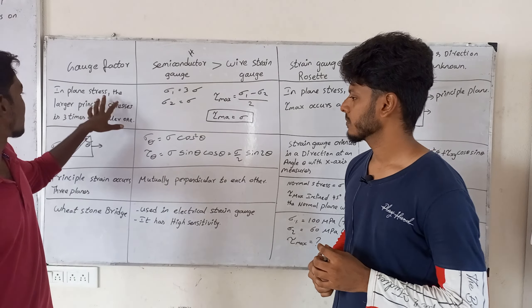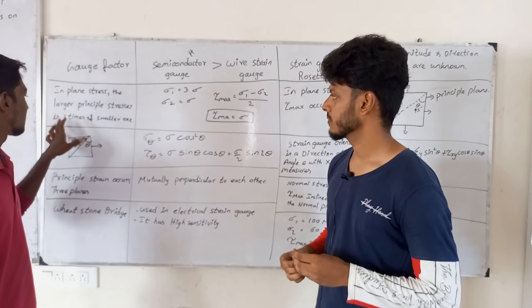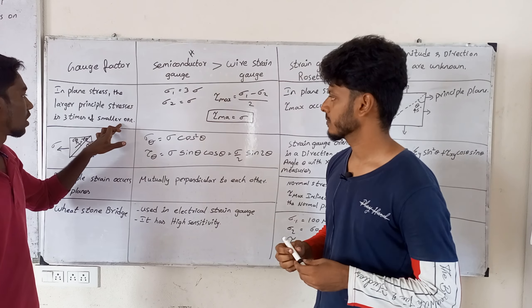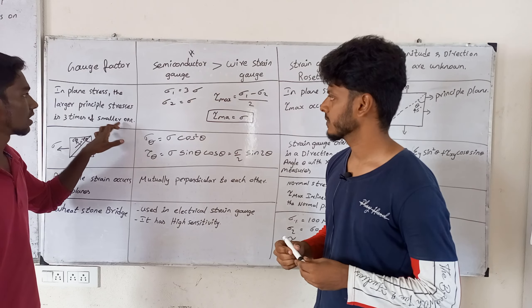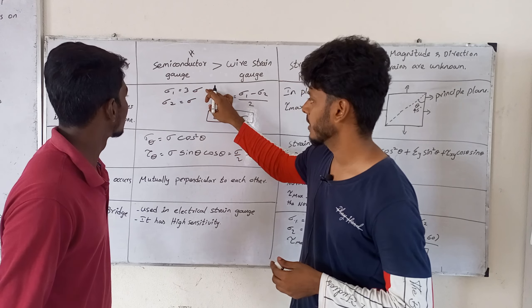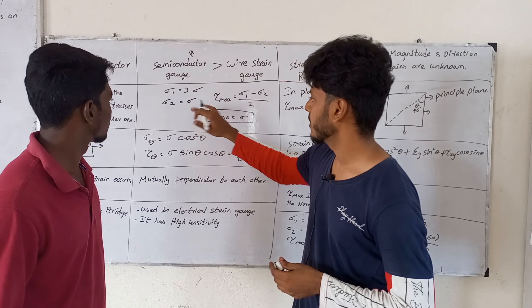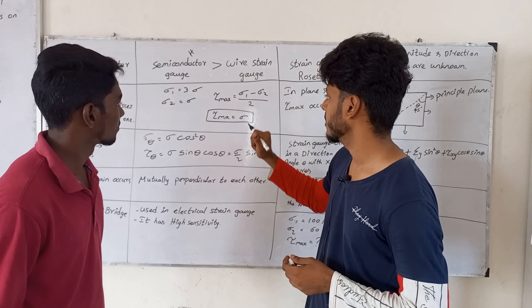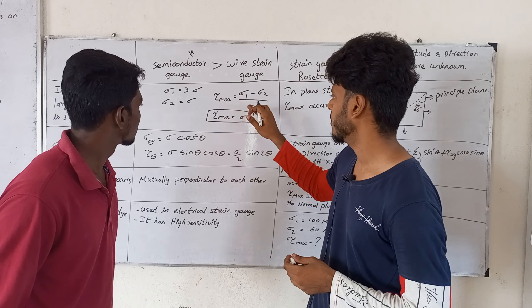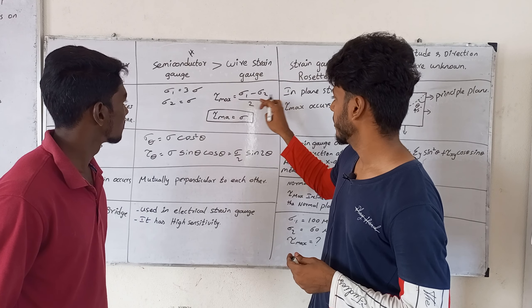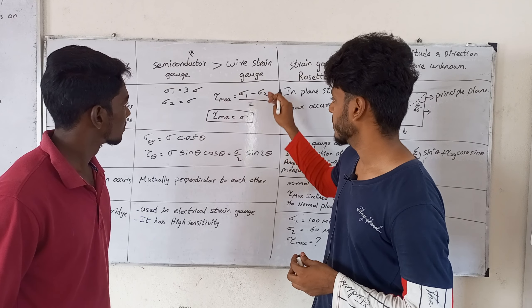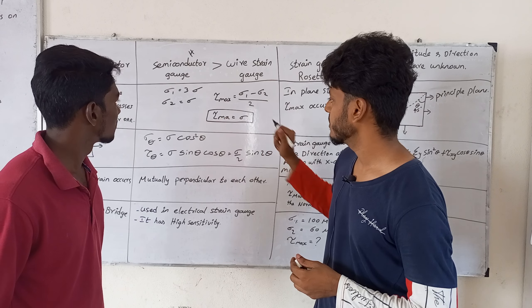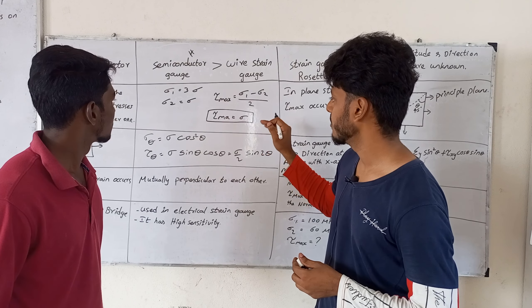In plane stress, the larger principal stress is three times the smaller one. Sigma-1 is three times sigma-2, and sigma-2 equals sigma. If we substitute into the maximum shear stress formula and substitute sigma-2, the maximum shear stress equals sigma.